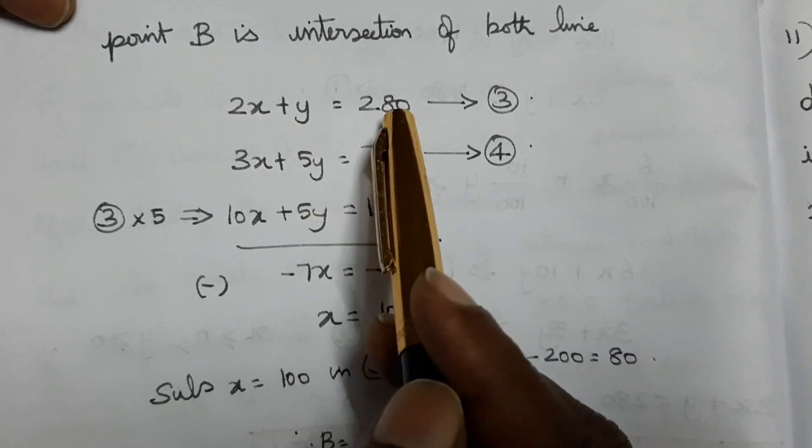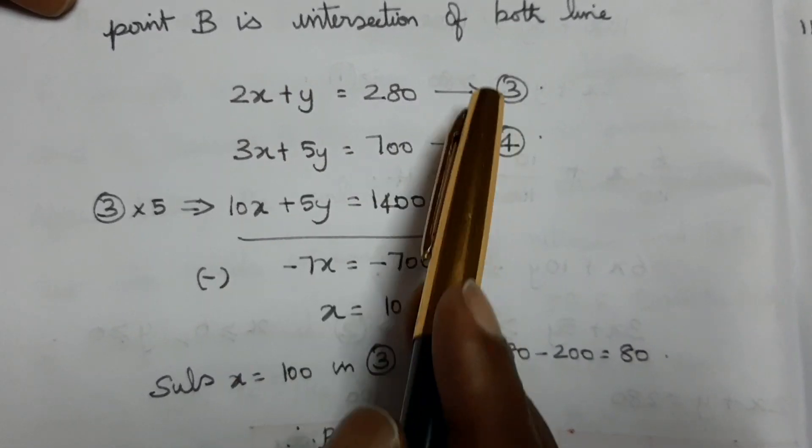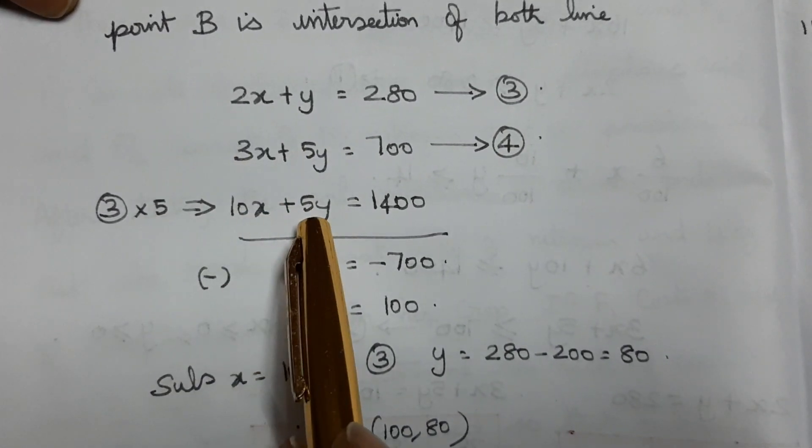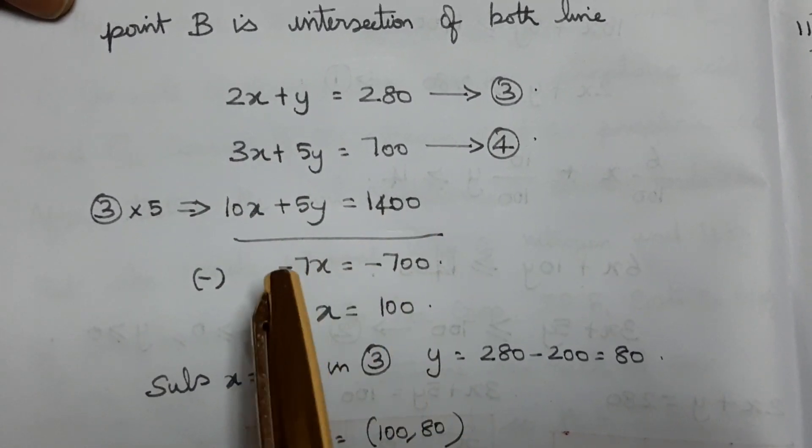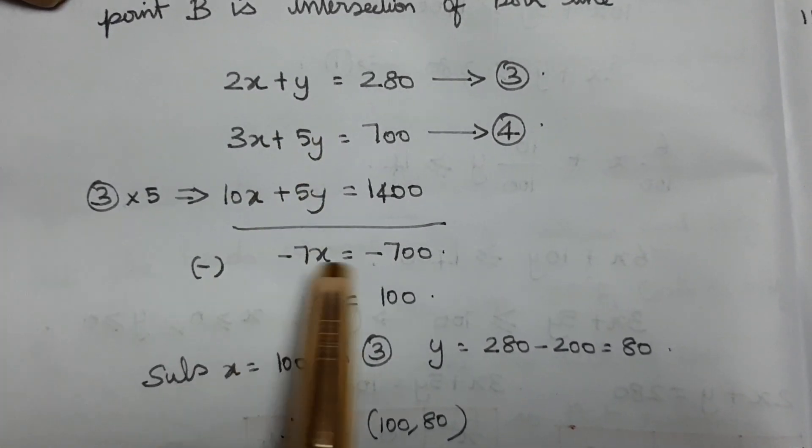Now for the equation 2x plus 5y equals 700 and 3x plus 5y equals 1400. Subtracting these gives minus 7x equals minus 700, so x equals 100.